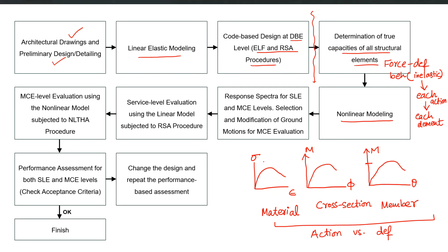These capacities are for different materials, cross-sections, or members, and they are a function of the initial design — the reinforcement amount, cross-sectional sizes, shear reinforcement, confinement, and detailing provided. That will result in some capacity, which we calculate to make a non-linear model. This capacity is given to the non-linear model as input in the form of non-linear curves representing the true relationship between actions and their corresponding deformations. This is what I mean when I say the code-based design serves as input for the performance-based design.